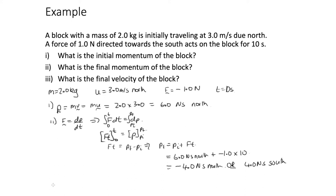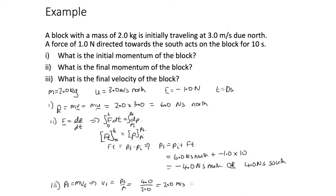Part three asks for the final velocity. Using p final equals m v final, v final equals p final over m equals 4 divided by 2, which equals 2 metres per second south.